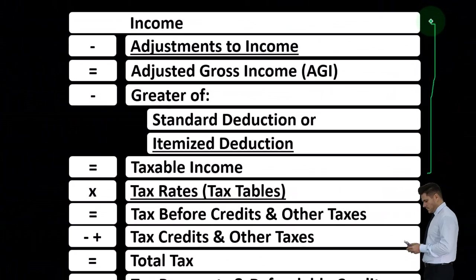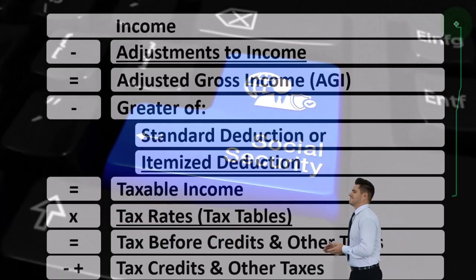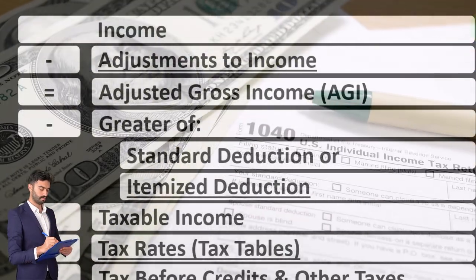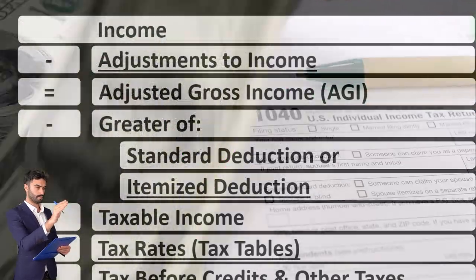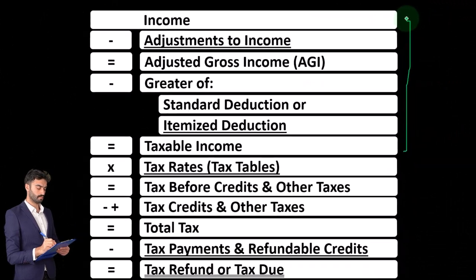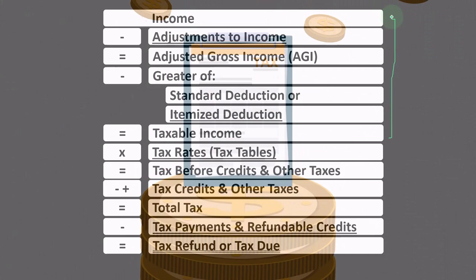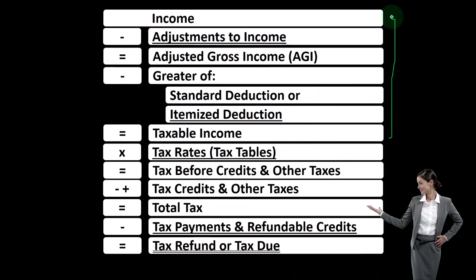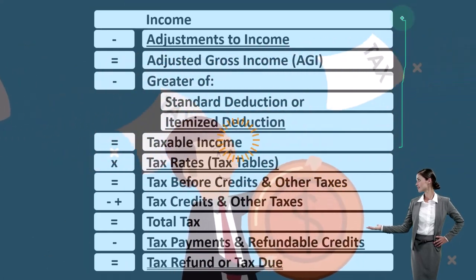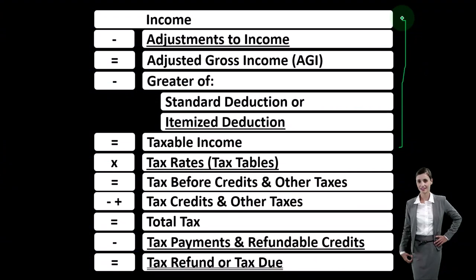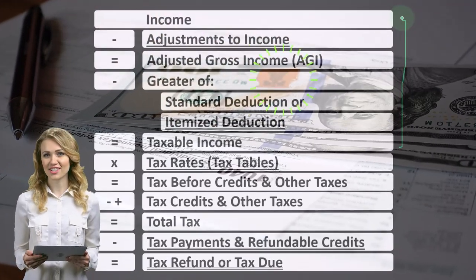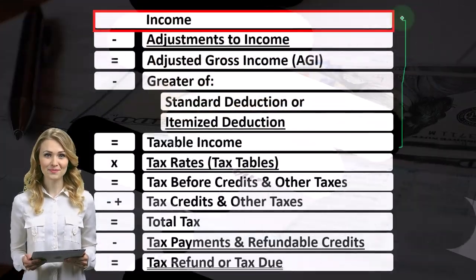The more money you put into the system during working years — meaning higher income means higher taxes paid in — the higher your benefits will generally be. However, it also has welfare components: on the higher income side, additional payments yield less added benefit. When you receive payments, if your income is below a certain threshold you may not be taxed; above it, up to 85% of Social Security may be taxable.